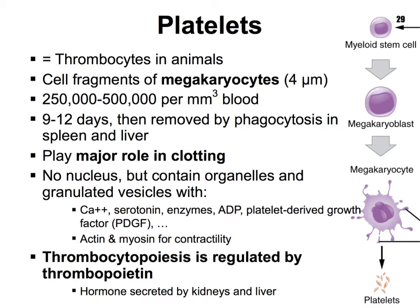In that clotting role, platelets release all kinds of chemicals from little granules found inside of them. These platelets, aside from these vesicles with granules inside of them, also contain some organelles, interestingly enough. We're going to learn about all the different chemicals they release when we learn about the clotting process. Platelets can also easily change their size and shape as they begin the process of stopping the flow of blood. Just like muscle cells, they contain actin and myosin to allow contraction to occur and change shape that way.